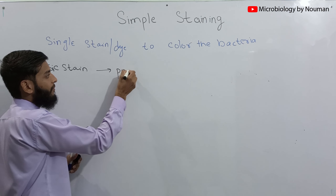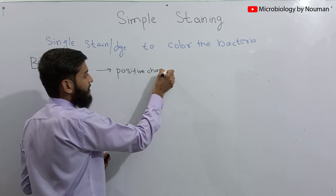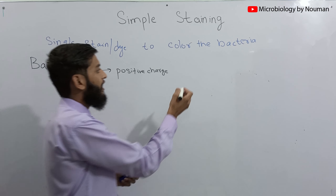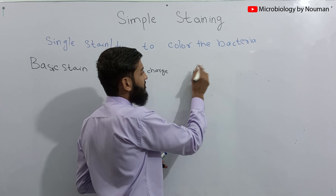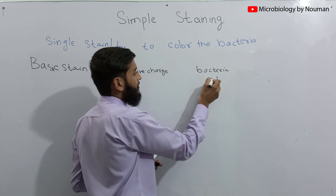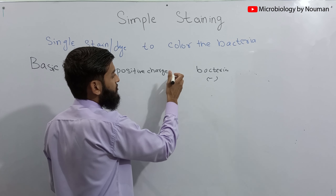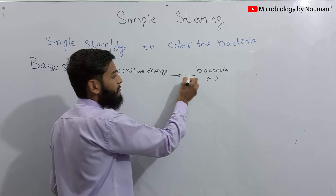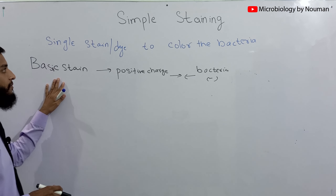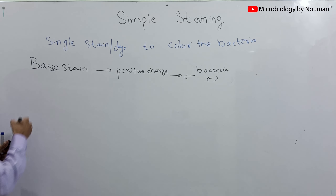We use basic stains because they contain a positive charge on them, and bacteria — due to bacterial nucleic acid and different bacterial structures — carry a negative charge. So the stain has a positive charge and bacteria have a negative charge, resulting in attraction between the positively charged stain and the negatively charged bacteria.